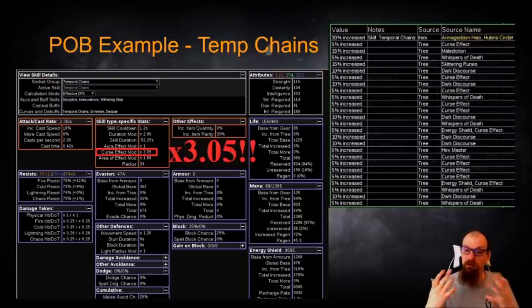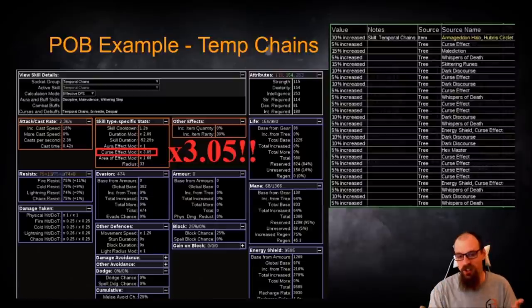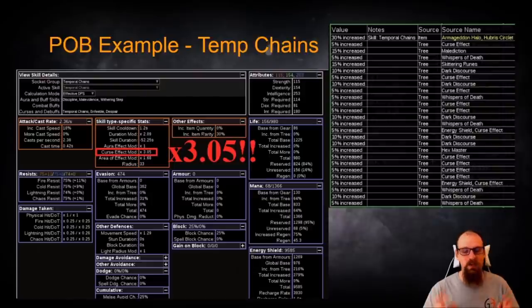So while certain ailment-based builds like stun builds or even like freeze builds or chill builds can reduce that action speed or even prevent it altogether from going off because of a status effect or a status ailment, in this particular way, stacking Curse Effect on Temp Chains won't make it so that way Shaper or Cirrus or Uber Elder won't be able to move at all, but it will mean that they're moving essentially in ESPN Highlight Slow Motion speed.